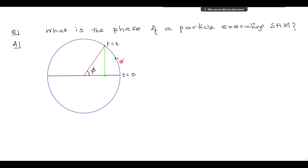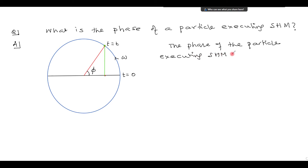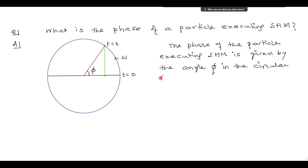Because in the circular model, the parent particle rotates with uniform angular speed omega. So the phase of the particle executing SHM is given by the angle phi in the circular model, and phi equals omega into t.